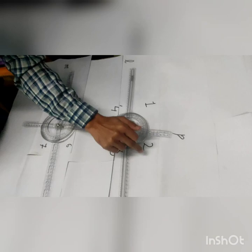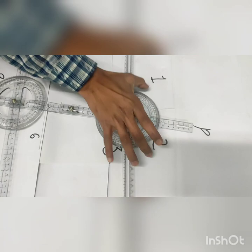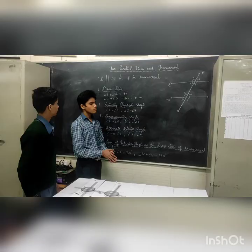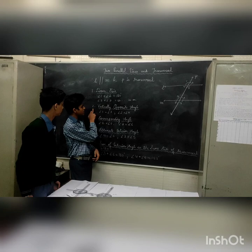Now let's look at the angles. Angle 1 and angle 2 form a linear pair — these two angles together measure 180 degrees.